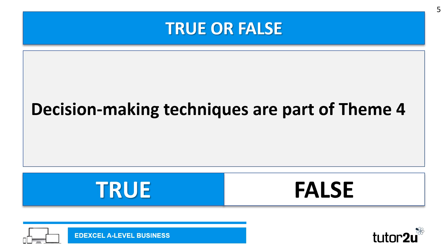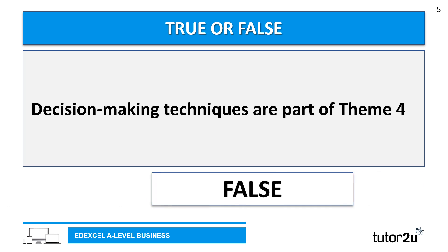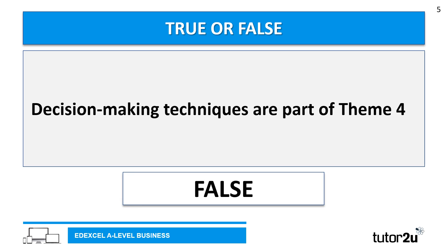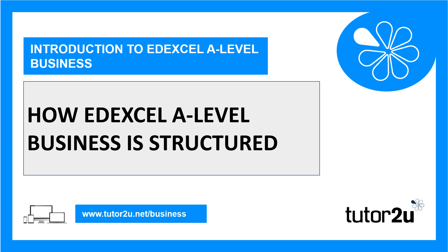Last true or false: decision making techniques are part of theme four. Decision making techniques look at things like investment appraisal, quantitative sales forecasting, critical path analysis and decision trees. Are decision making techniques part of theme four? Remember, theme four is Global Business. Are decision making techniques covered in that theme? Well, the answer is false — decision making techniques are part of theme three. That concludes the first video where we've looked at how Edexcel A-Level Business is structured. Next, we will be looking at assessment and how the course is assessed.